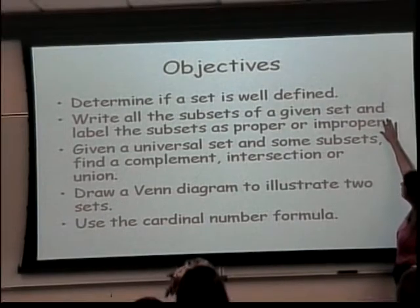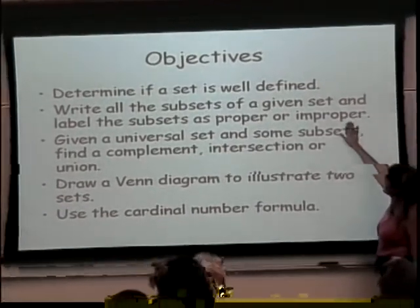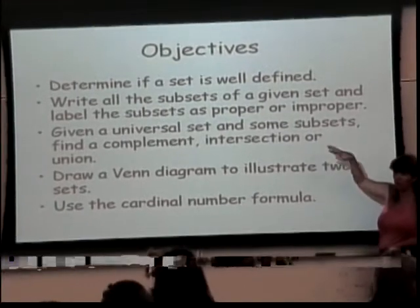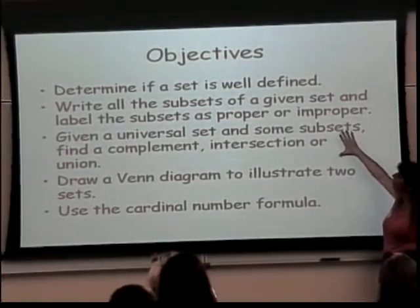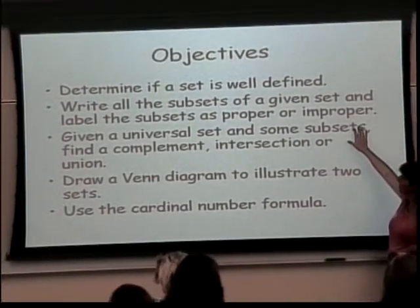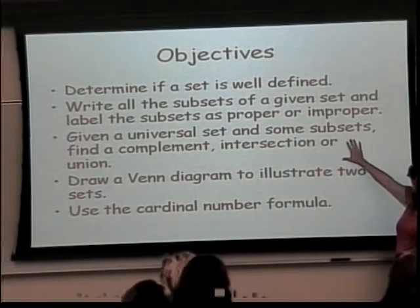We're going to write subsets of a given set, and there's a thing called proper and improper. We'll talk about those. We're going to take a universal set and some of the subsets, find complements, intersections, and unions.